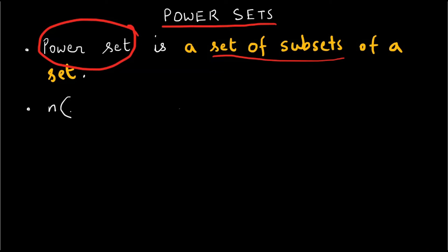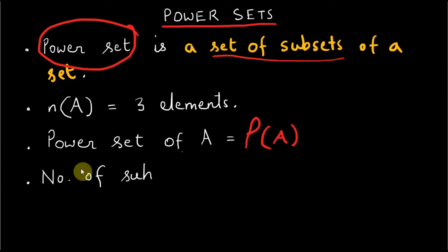If set A is an ordinary set with three elements, then power set of set A is denoted as P(A) and the number of subsets in a power set is 2 raised to n.